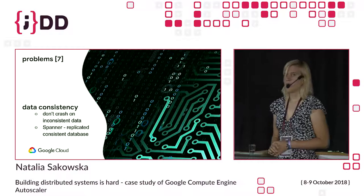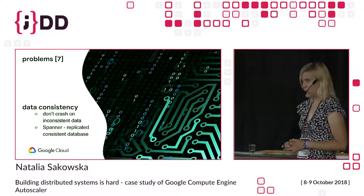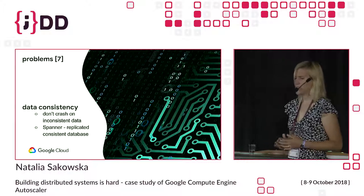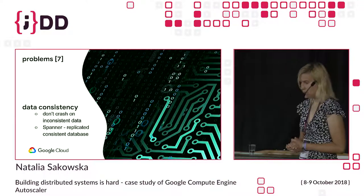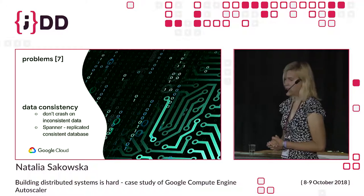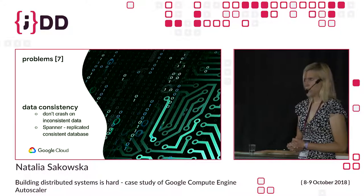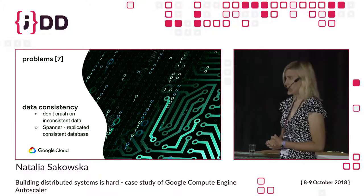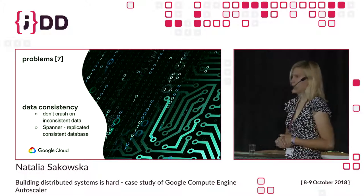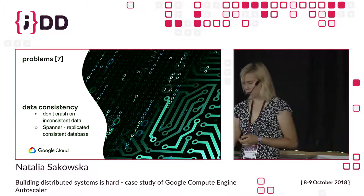Simplifying: our backends are reading from a database, and this database also needs to be replicated. We use Spanner — a distributed database that promises global consistency. And by the way, Spanner is also available externally as Cloud Spanner.